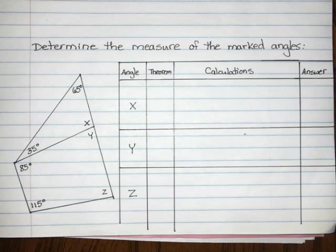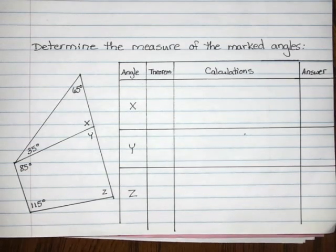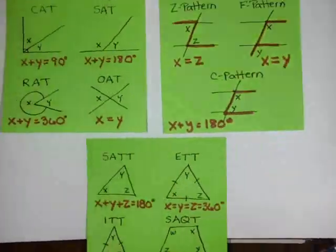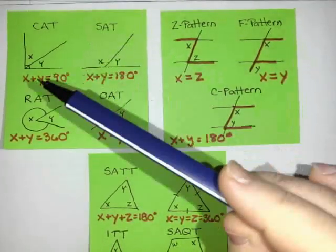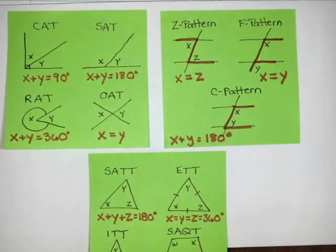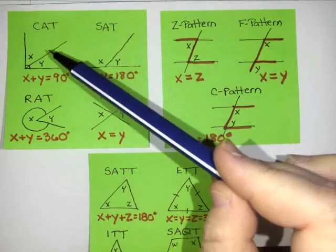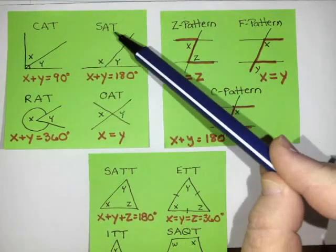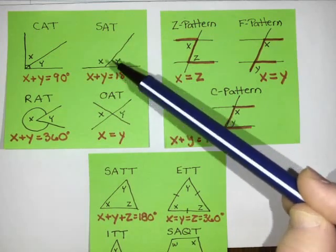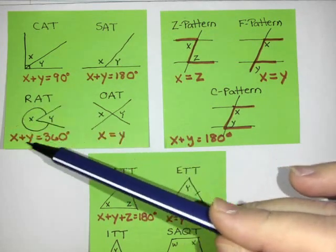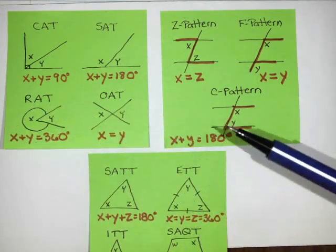We're going to do an example of a question involving a quadrilateral. Before I start, I have made a little reference sheet with all the different theorems we've learned so far. We have complementary angles that add to 90, supplementary angles which are a straight line and add to 180, and reflex angles which make a full circle and add to 360.